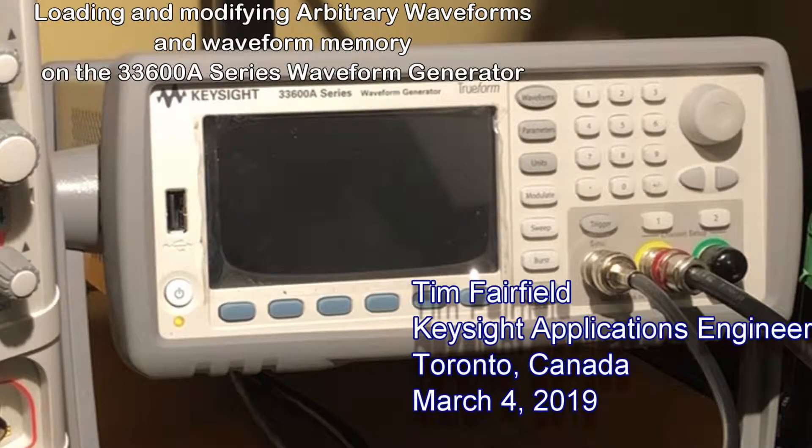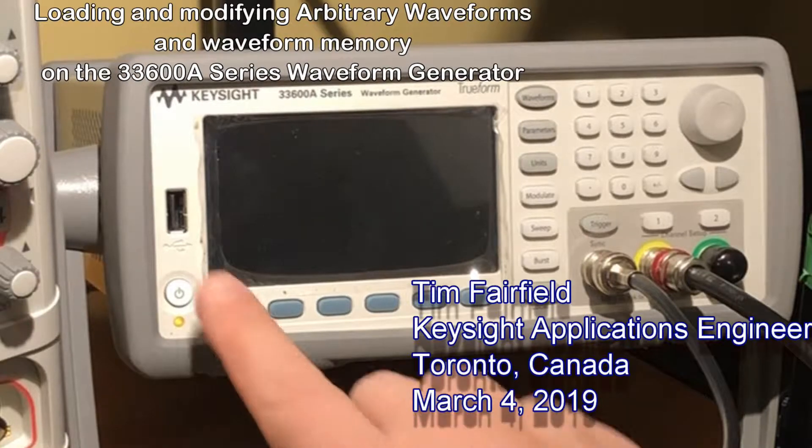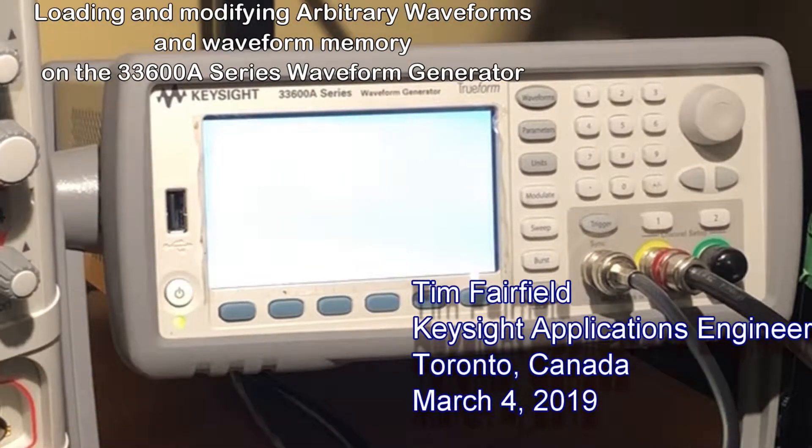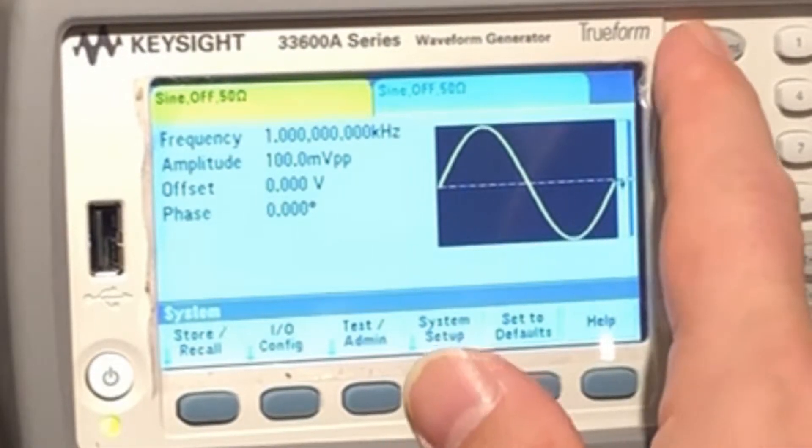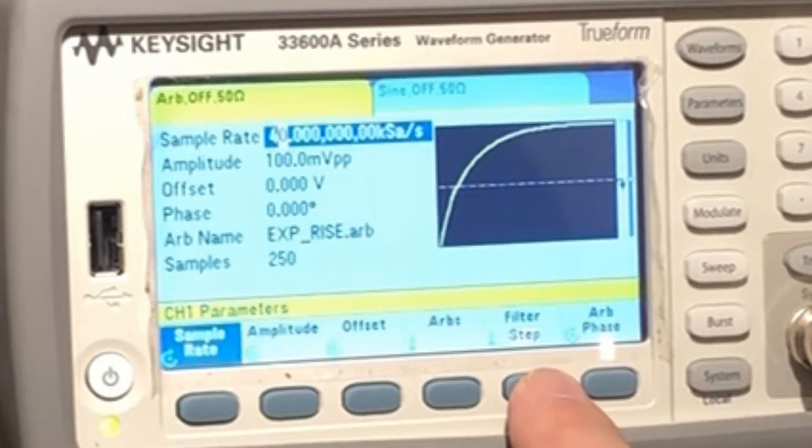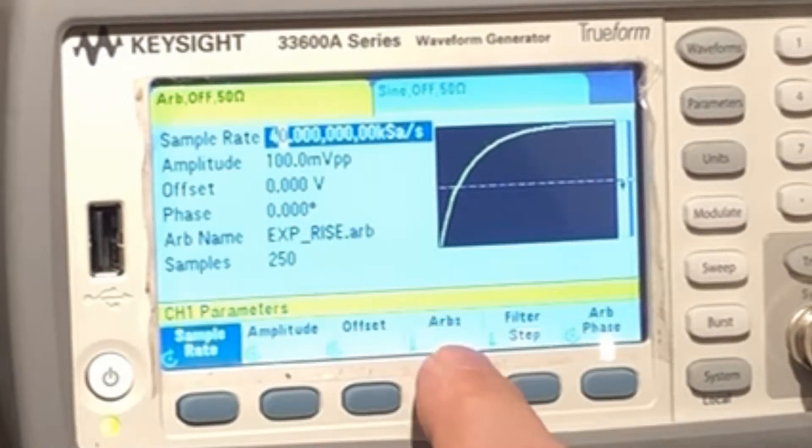Okay, I'm going to talk about how to load these arbitrary patterns in. We're going to start with the instrument off, this is the 33600A series. I want to go into waveforms, select arbitrary, and then we're going to select ARBS.